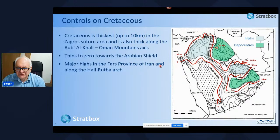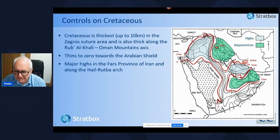The Cretaceous is thickest — up to about 10 kilometres — towards the Zagros suture area, and is also thick along the Rub' al Khali–Oman mountain axis towards the southern part of the Gulf. It thins to zero mainly by onlap towards the Arabian shield, and there are major highs in the Fars province of Iran and along the Hyleiba arch where the Cretaceous is much thinner.